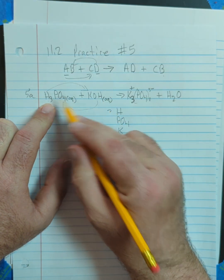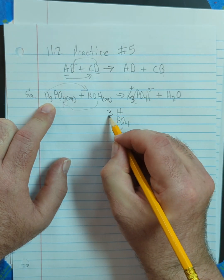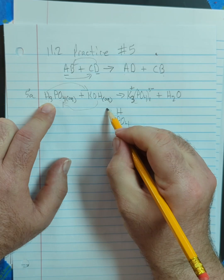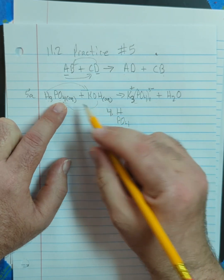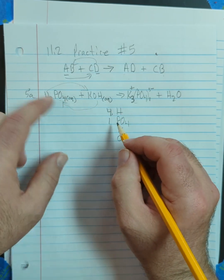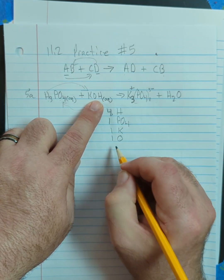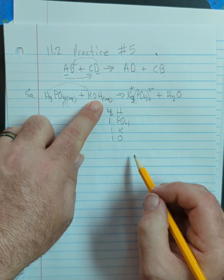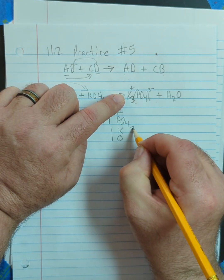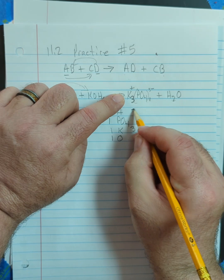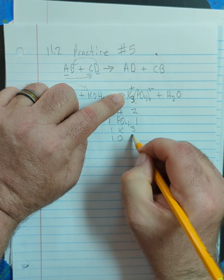So we have three hydrogens. Actually, we have four hydrogens. We have three here, one here. We have one PO4, one potassium and one oxygen that is not part of the PO4. On the product side we have three potassium, one PO4, two hydrogen, and one oxygen.